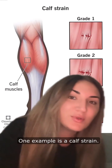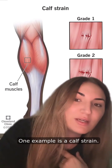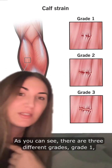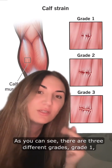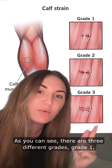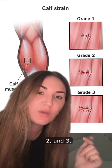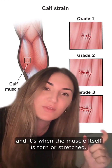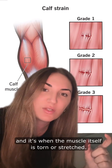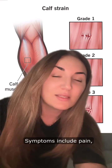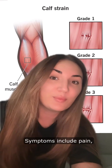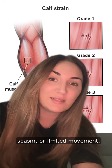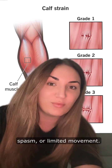One example is a calf strain. As you can see, there are three different grades — grade one, two, and three — and it's when the muscle itself is torn or stretched. Symptoms include pain, spasm, or limited movement.